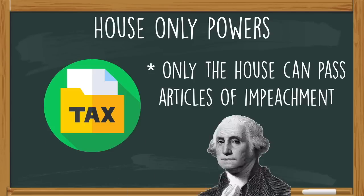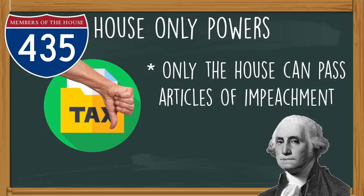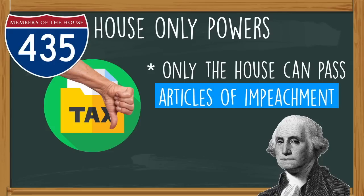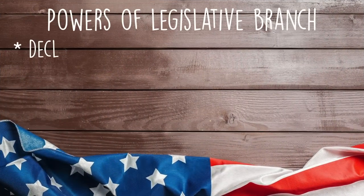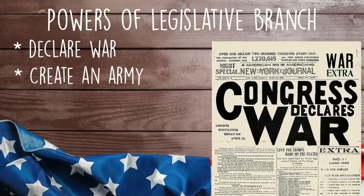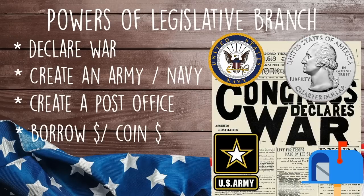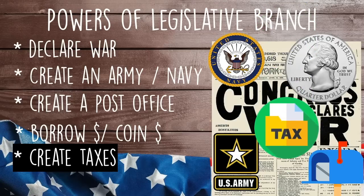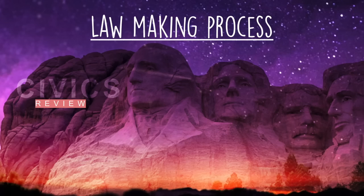In order to start the impeachment process, the House of Representatives has to pass an article of impeachment — the Senate really can't remove a president from office until the House acts and officially passes an article of impeachment. Together, both the House and the Senate can declare war, create an army and a navy, create a post office, borrow money or coin money, create taxes, regulate trade, and as lawmakers, they can make laws.